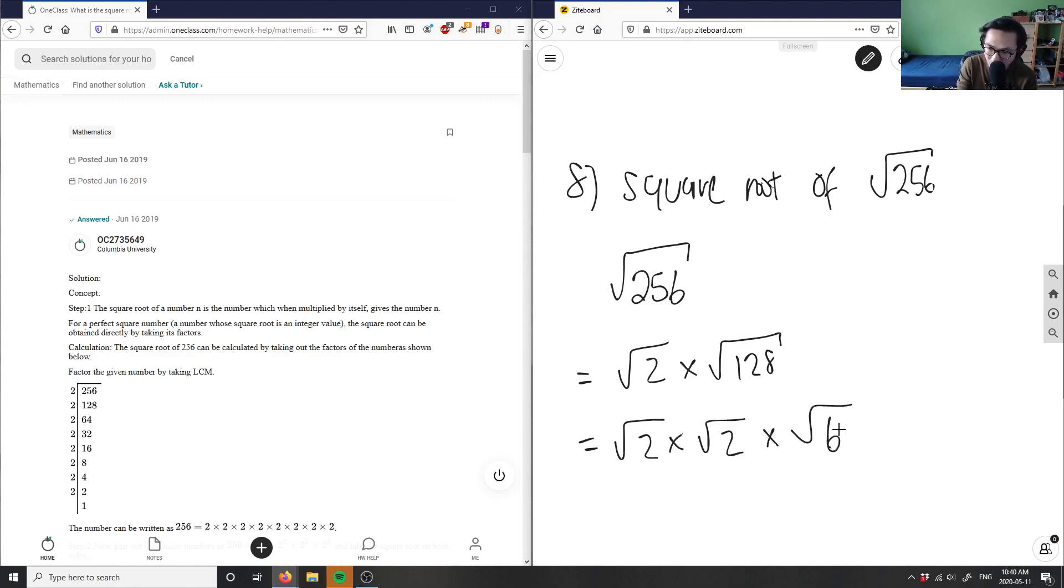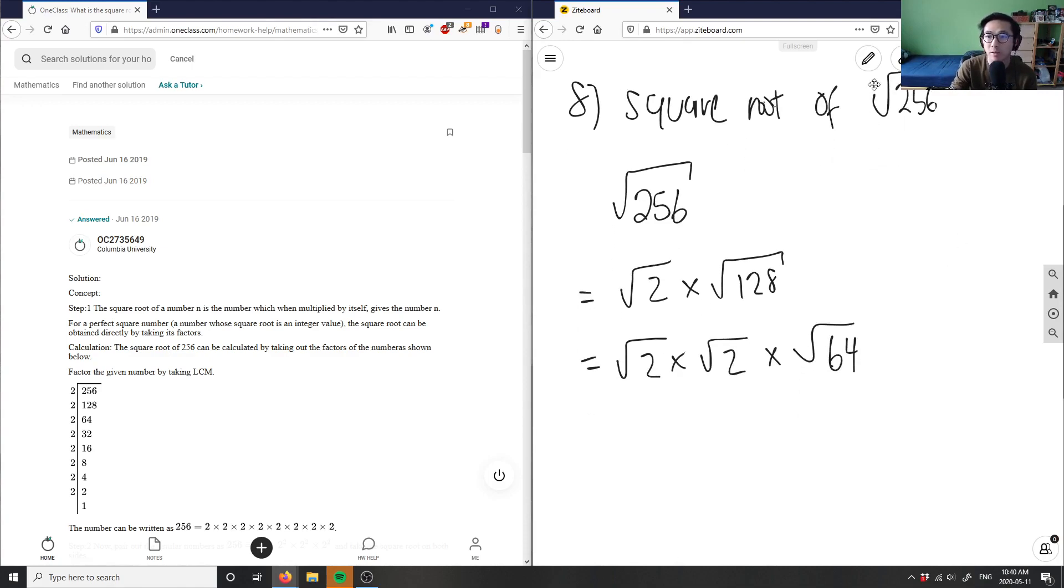So I have 64, and I can stop here because I know that the square root of 64 is a perfect square. I know that 8 squared is 64, so therefore the square root of 64 equals 8. Therefore, I have root 2 times root 2 times 8.